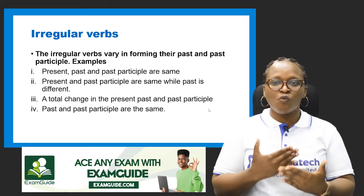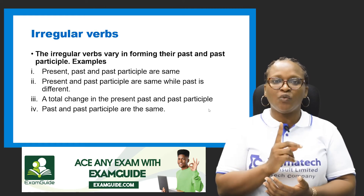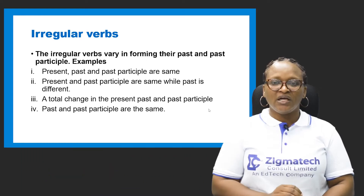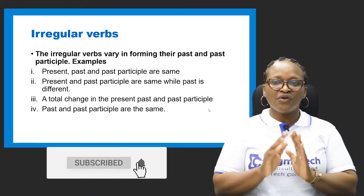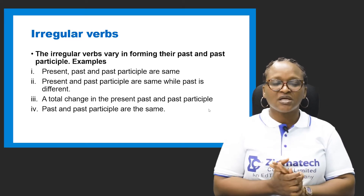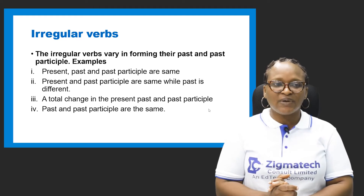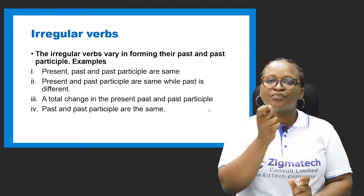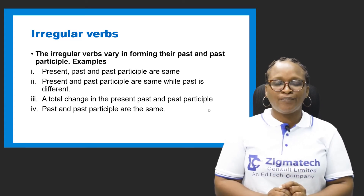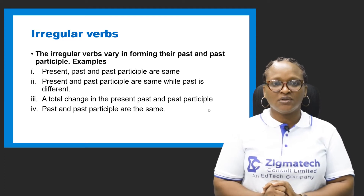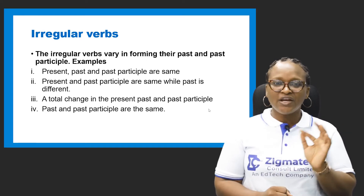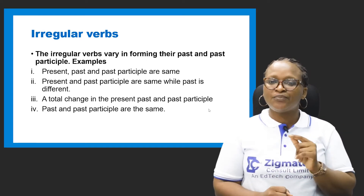The third way of forming the irregular verb is a total change in the present, past, and past participle. Take the word 'speak': the present is speak, the past is spoke, and the past participle is spoken — speak, spoke, spoken.